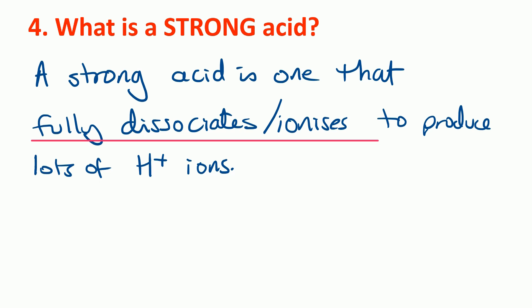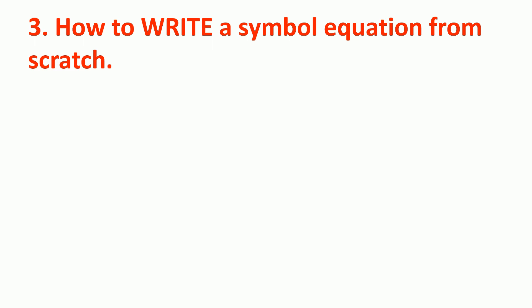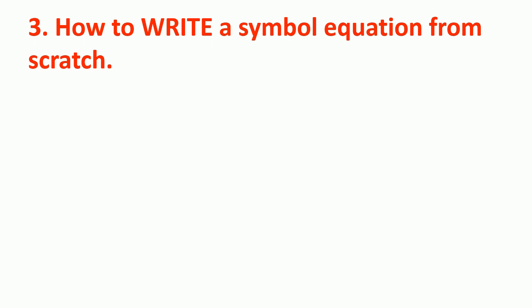Number 3, this is one just for the higher tier candidates, how to write a symbol equation from scratch. So that involves working out the formula of each reactant and product and then balancing the equation. So up here now is a link to a video where I explain how to do this in a few easy steps.